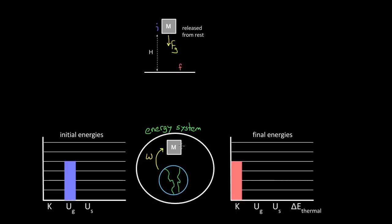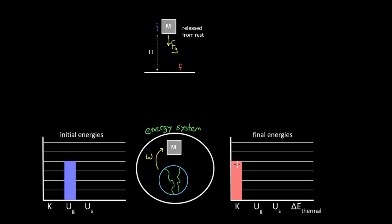Think about it this way: let's say you and your friend, instead of the Earth and the mass. Instead of energy, we'll talk about money. You, the Earth, give your friend, the mass, $10 — instead of 10 joules of energy, you give them $10. How much total money is there between you and your friend? There's still the total amount. You lost $10, your friend gained $10, but between the two of you, you still have the total amount you started with. The same is true with energy — whenever work is done internally between objects in your system, there's no change in total energy. That's why I drew kinetic energy as four units, because no energy entered or exited our system.